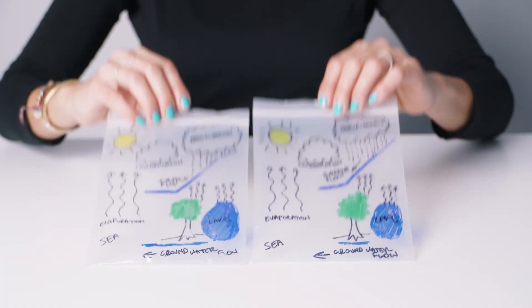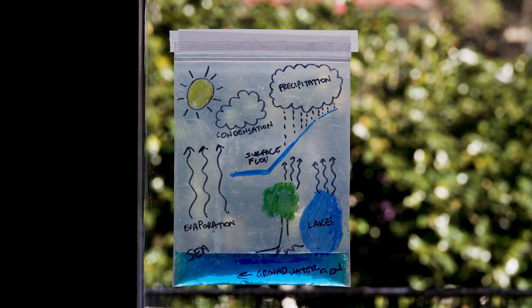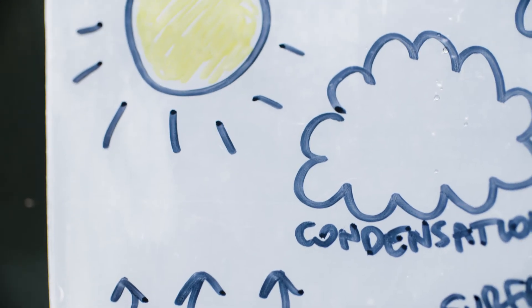Draw the water cycle on two zip-lock bags adding water and tape one to a sunny window and the other to a window in the shade. Observe and compare the two bags over several days.